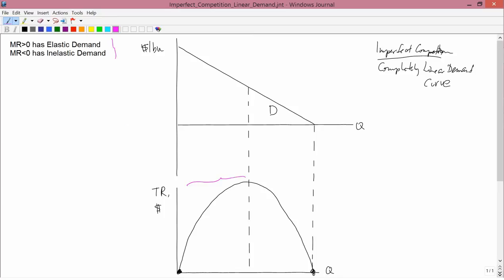Clearly, at this part of the total revenue curve, marginal revenue is positive because total revenue is going up. The tangent lines have a positive slope. So we can conclude that since you have positive marginal revenue, this area has to be elastic. In other words, this part of the linear demand curve is elastic.